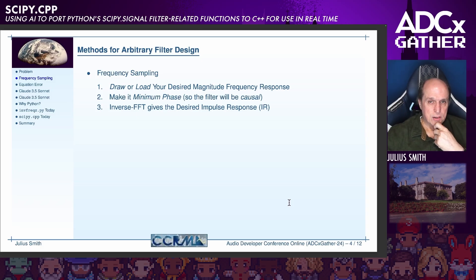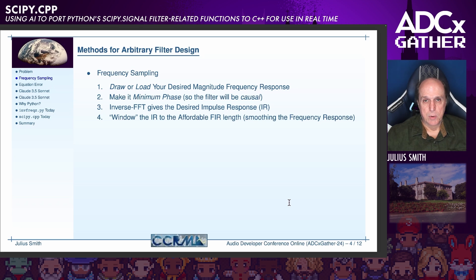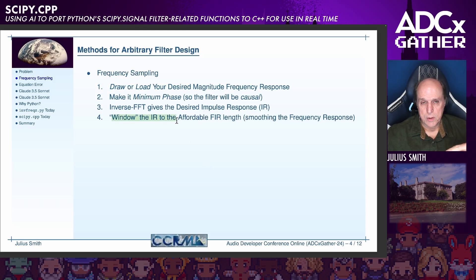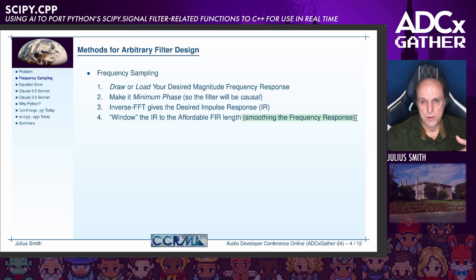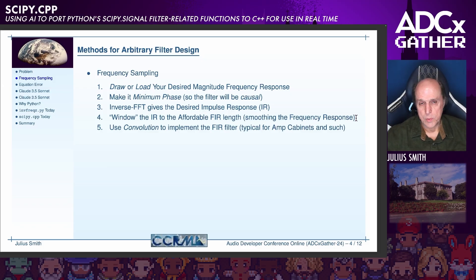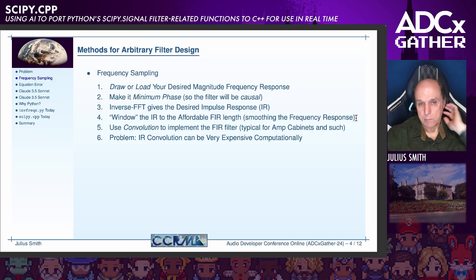Then you take the inverse FFT and get the desired impulse response, so now you can work in the time domain. You want to think in the frequency domain and implement in the time domain. It'll be causal, but probably too long because you just drew something arbitrary. So you window it with like the right half of a Hann window — take it down to affordable length. Windowing in the time domain is smoothing in the frequency domain, so you should forward FFT and make sure it's still okay. Then we use convolution to implement an FIR filter, which is typical for amp cabinets and even reverb nowadays.